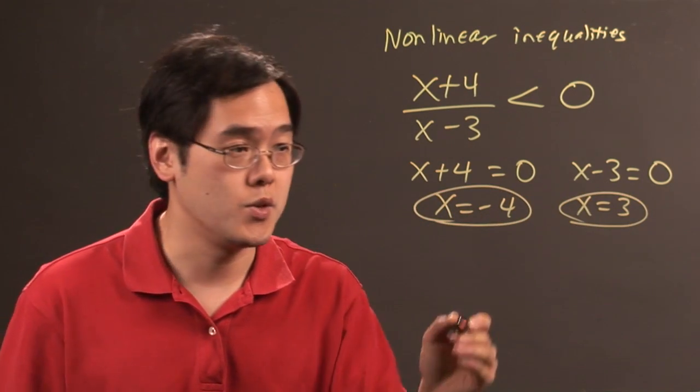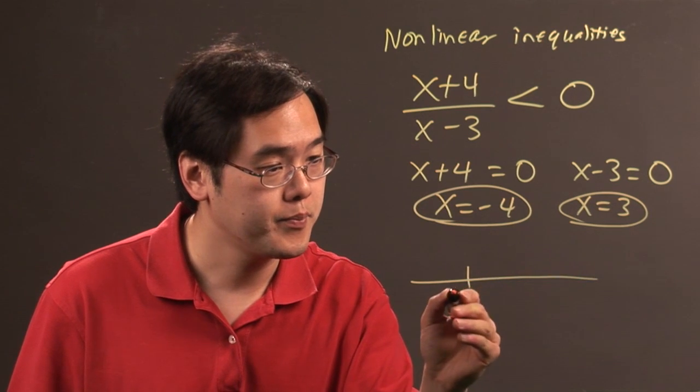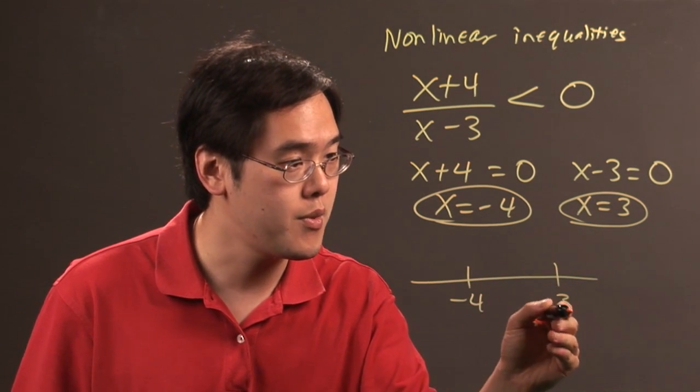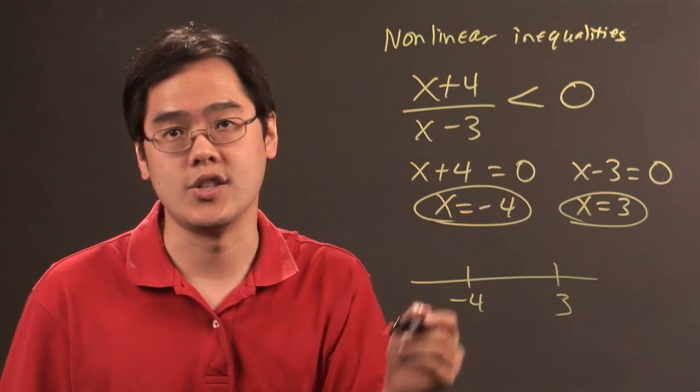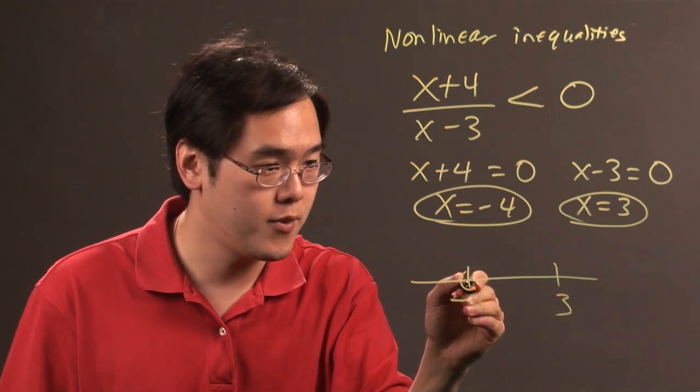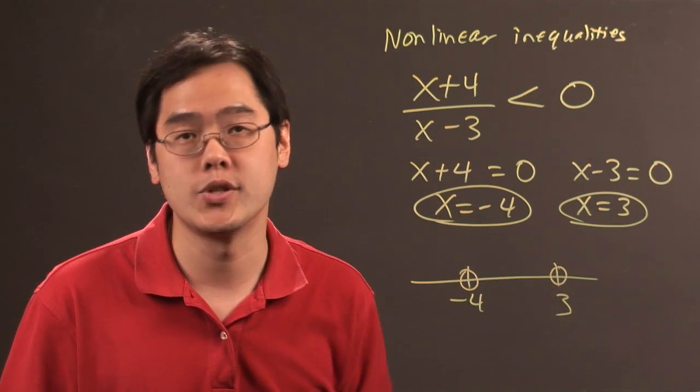What are we going to do with these? We're going to put these on the number line: -4 and 3. Because it's strictly less than 0, negative 4 and 3 will not be included. That's where the open circles come in.